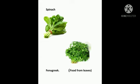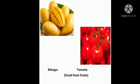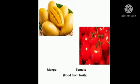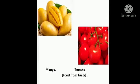The next one is spinach and fenugreek. We get these foods from leaves. Which part? Leaves. The next one is mango and tomato, and we get mango and tomato from fruits. From which part of the plant? Fruits.